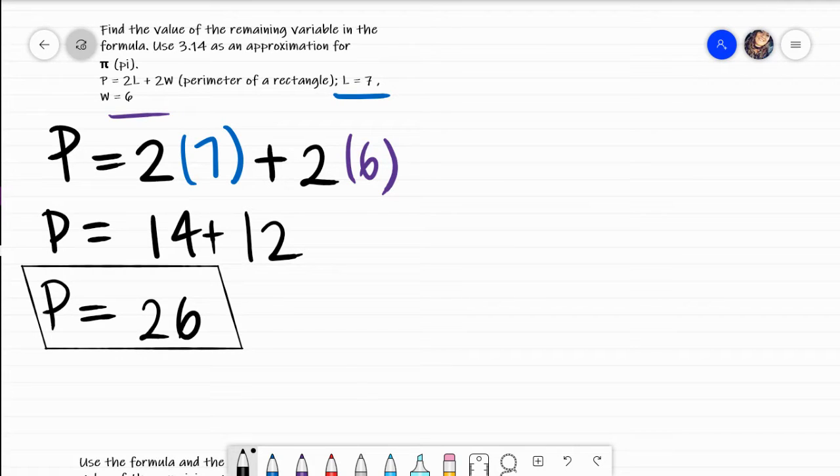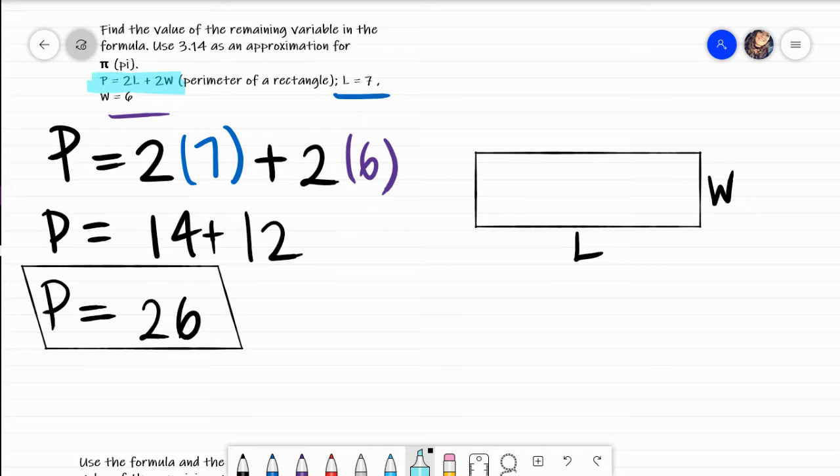It literally gave us a rectangle, and this would be our length, that would be our width. The reason why our formula is 2 times the length, 2 times the width is because we have 2 lengths and we have 2 widths. That's why we're going to go ahead and multiply both of those values by 2.